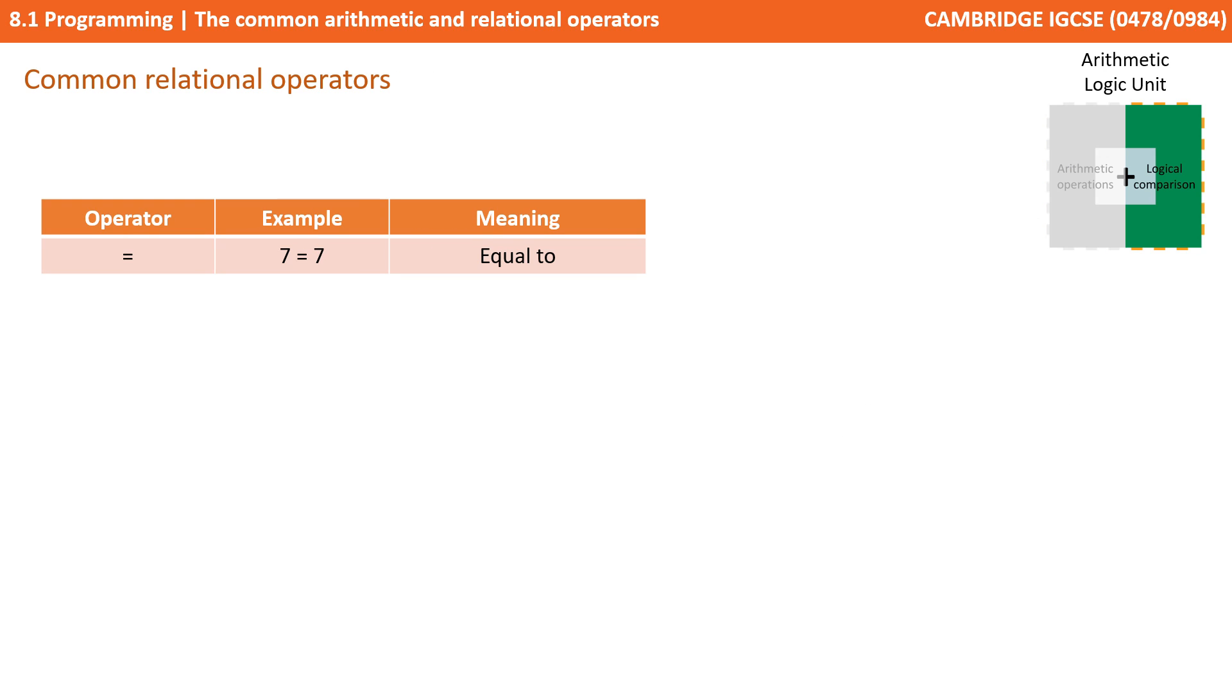OK, so now we move on to the common relational operators. The first of these is equals. So an example would be 7 equals 7. It literally means equal to.